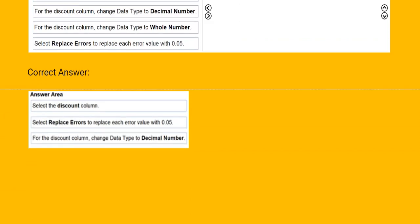The first step is select the discount column. The second step is select replace errors to replace each error with 0.05. The third step is for the discount column, change data type to decimal number.